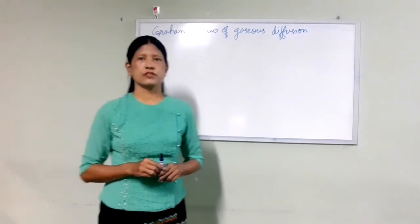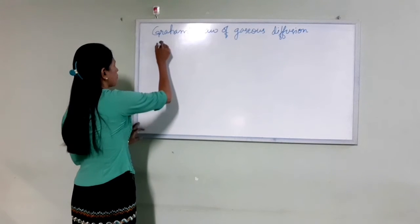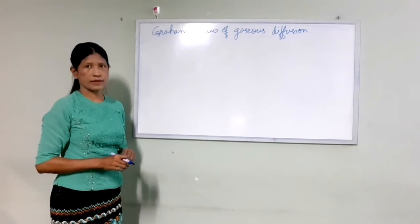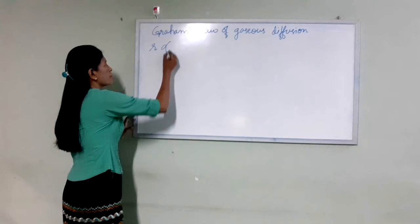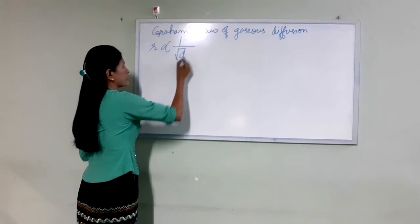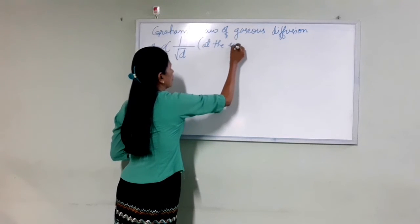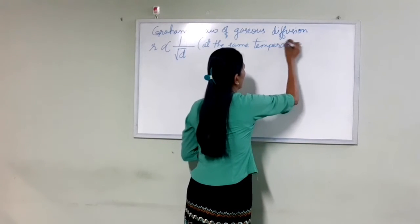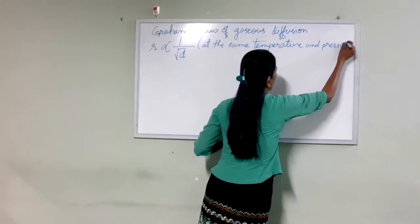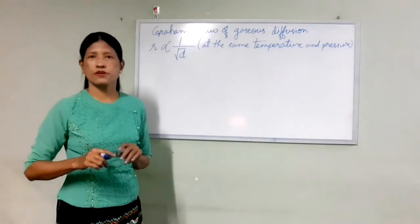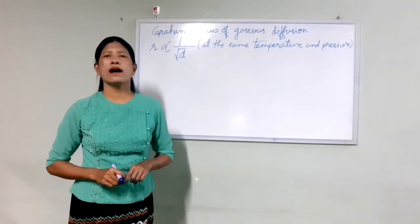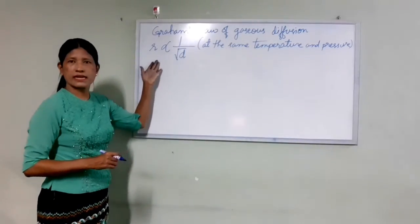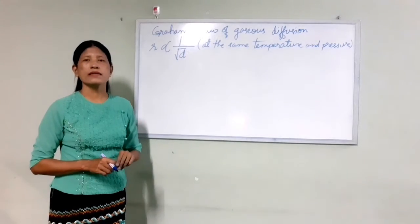This is a mathematical expression. The rate of diffusion r varies as 1 by square root of d, at the same temperature and pressure. The mathematical expression is: r varies as 1 by square root of d.